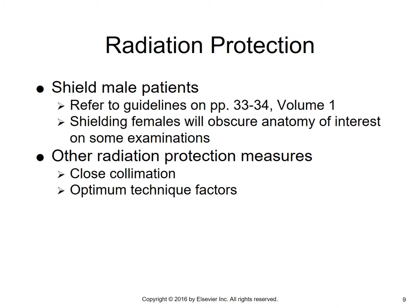As far as radiation protection is concerned, we should be able to shield male patients — there are guidelines in your book on pages 33 and 34 of Volume 1. It's difficult to shield female patients for a hip; you can put the lead apron on an angle and at least cover one ovary usually. For males, you should be able to shield both for hip and for pelvis, as the testes lie at a level lower than the symphysis pubis. Other radiation protection measures include close collimation and using optimum technique factors.